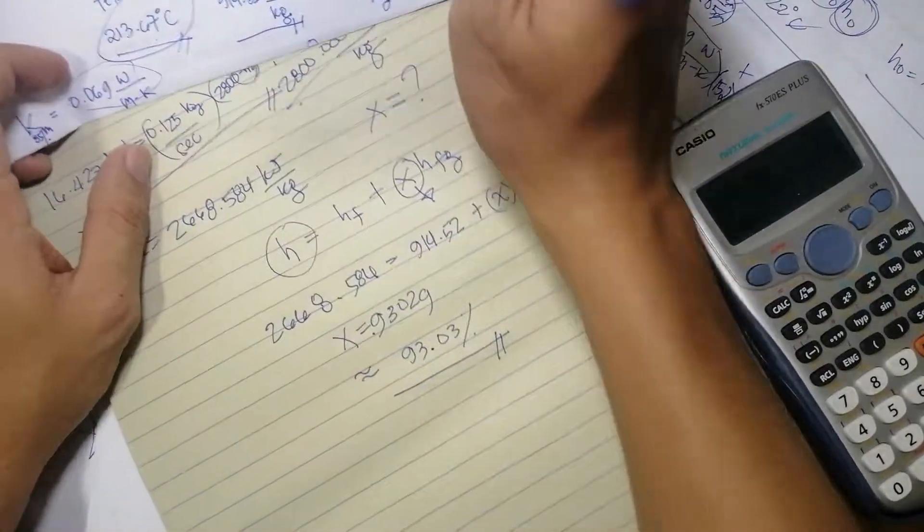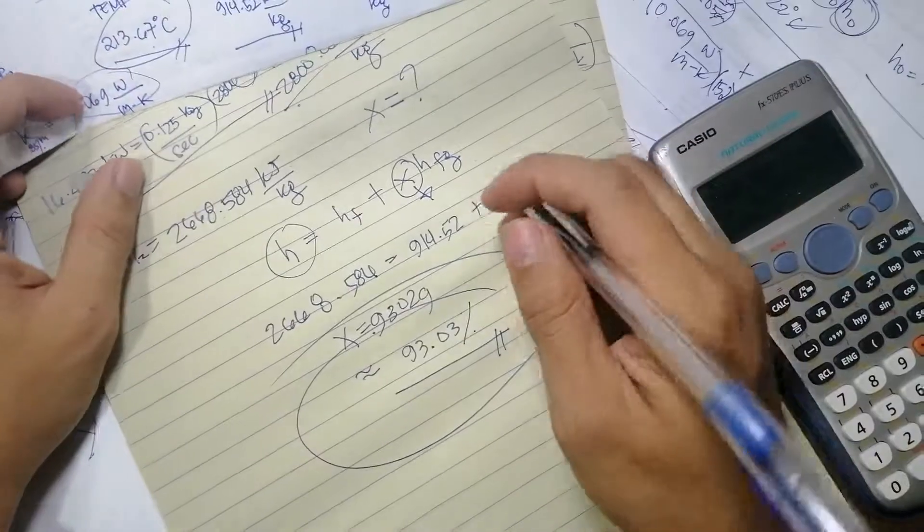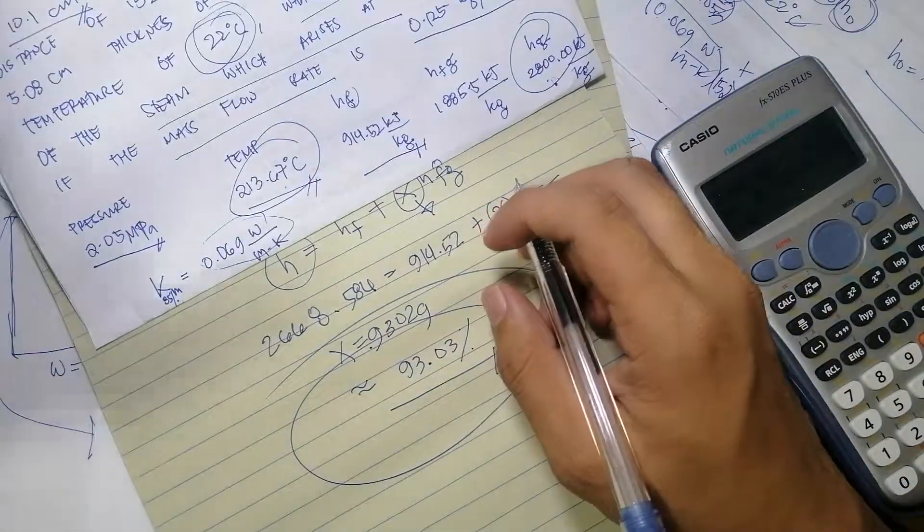93.03% is now the quality of the steam at the leaving point of the pipe. So there you go, you have the answer. Thank you.